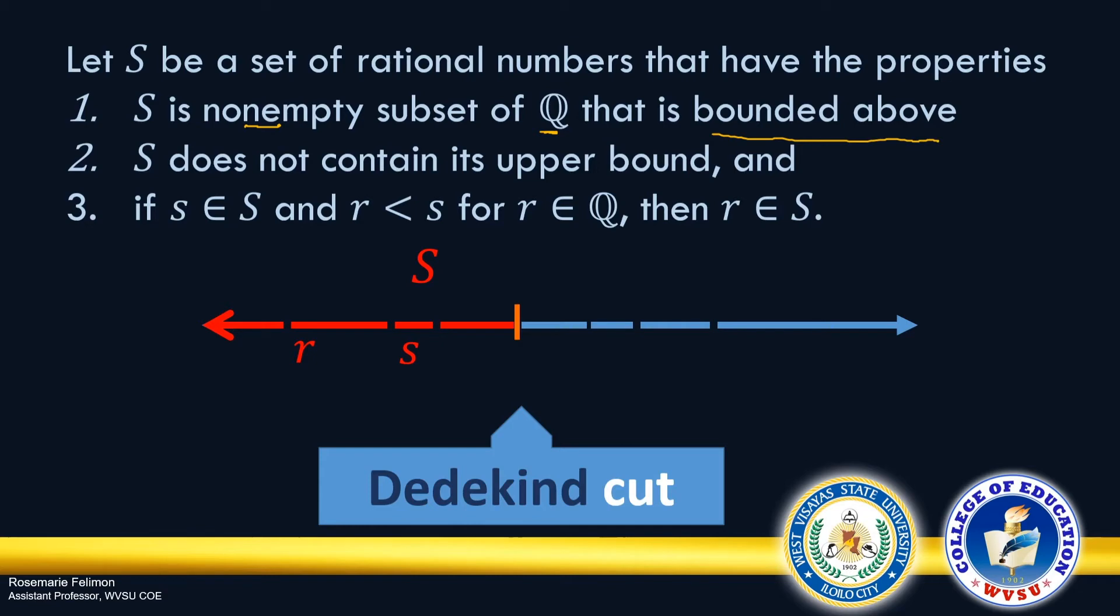So this simply describes a set S that is determined by a cut in the line that represents the rational numbers. But of course, this line would have holes or gaps because we are just talking about rational numbers. Irrational numbers are not yet included.